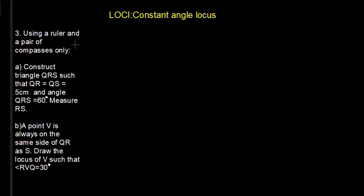So we use this question here to guide us in understanding constant angle locus. Using a ruler and a pair of compasses only, part A, construct triangle QRS such that QR is equal to QS which is 5 cm and angle QRS is 60 degrees and hence measure RS.